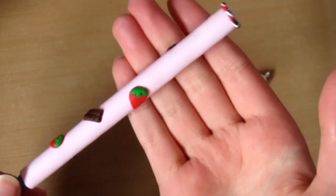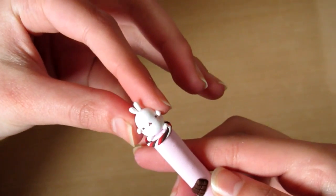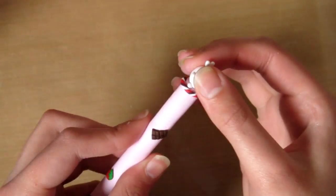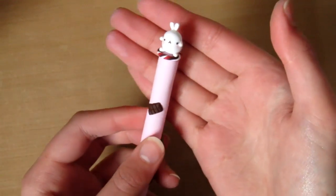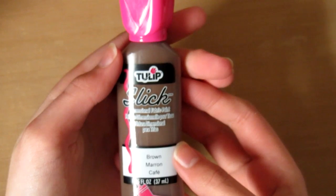And you just want to take some super glue and glue melang onto the top of the pen. Then you want to take some 3D paint. I'm just using Tulip in the colour brown. And you just want to shake this to make sure there's no lumps or anything. And you might want to practice on a piece of paper.